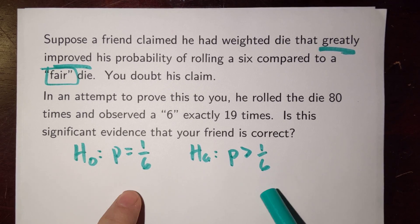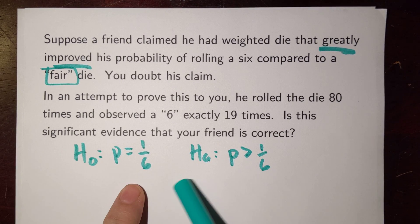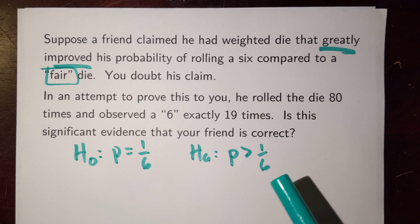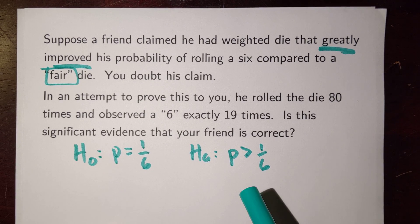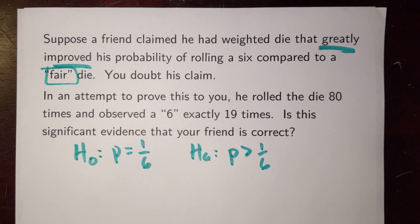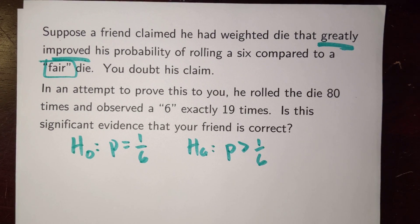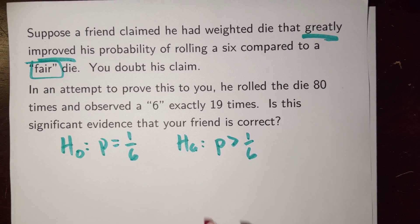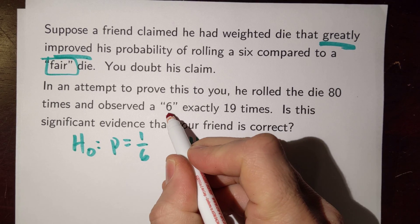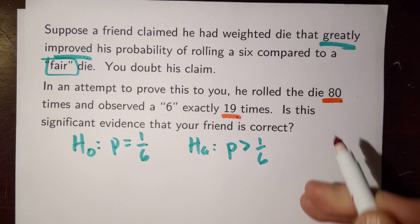And so actually in a previous class we made a 95% confidence interval, and we checked to see if 1/6 was in it, and we used that to make a decision in this situation. Today we're going to take a look at how we could potentially calculate something called the p-value to evaluate some evidence.